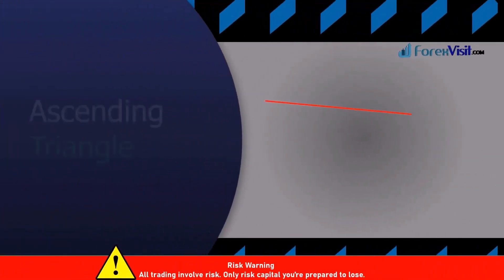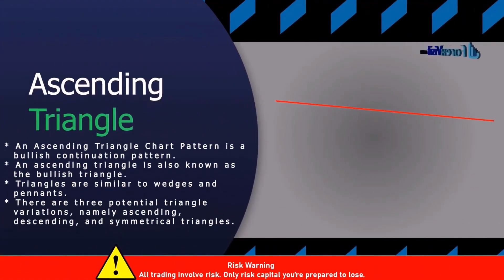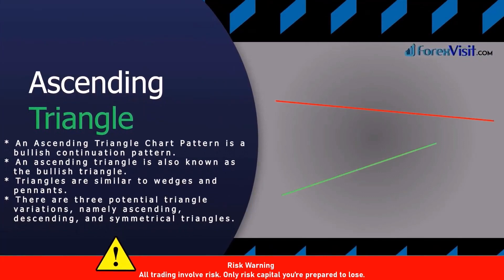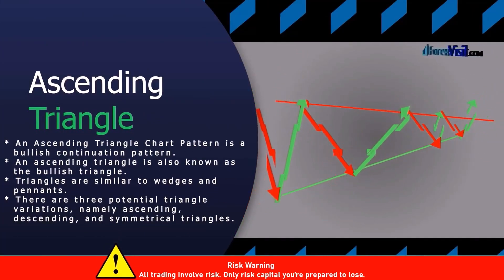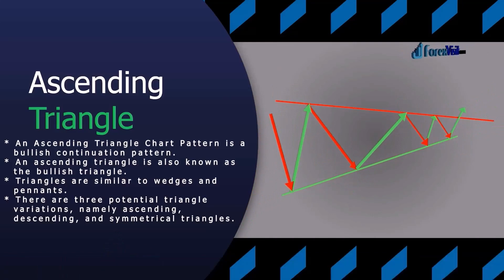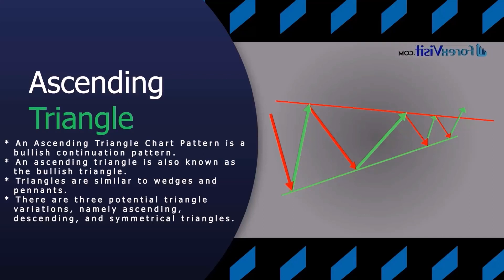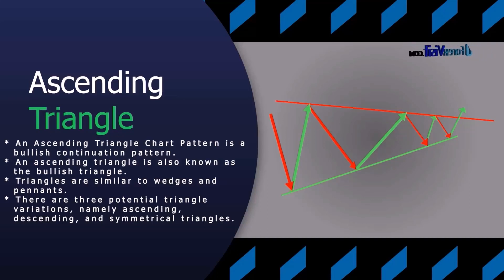Hello traders, welcome back to my YouTube channel. Today I'm going to share the advanced live scalping price action trading strategy. The ascending triangle is a bullish formation that usually forms during an uptrend as a continuation pattern. There are instances when ascending triangles form as reversal patterns at the end of a downtrend, but they are typically continuation patterns.